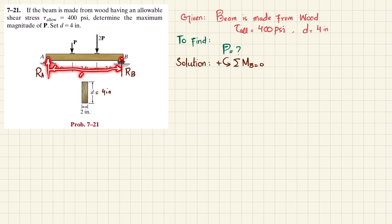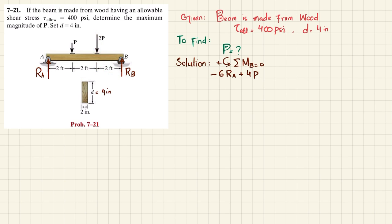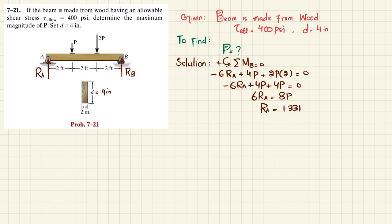About point B: the first moment is R_A times perpendicular distance of 6 feet, producing a clockwise moment, so it is negative: minus 6 times R_A. The second moment is due to load P at a perpendicular distance of 4 feet, counterclockwise, so plus 4P. The third moment is due to 2P at perpendicular distance of 2 feet, also counterclockwise, so plus 2P times 2. Solving: minus 6R_A plus 4P plus 4P equals zero, giving R_A equals 8P/6, which equals 1.33P.